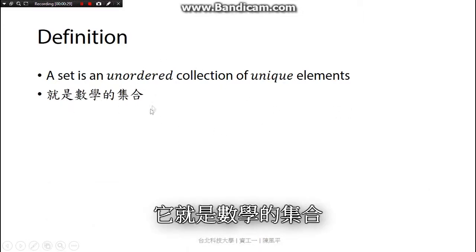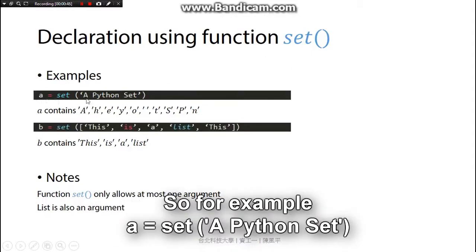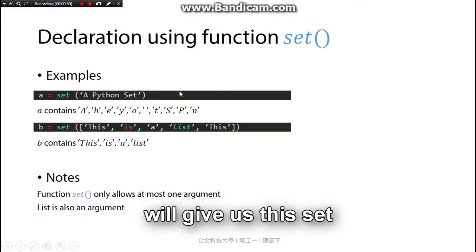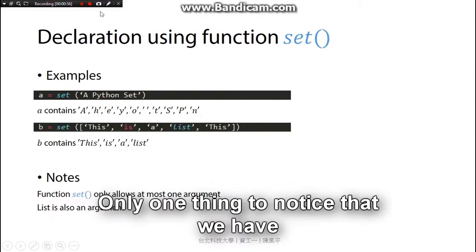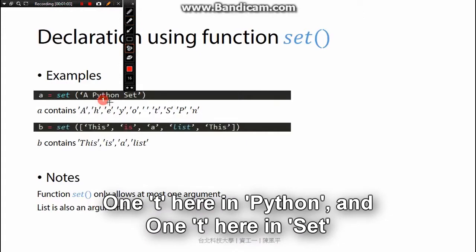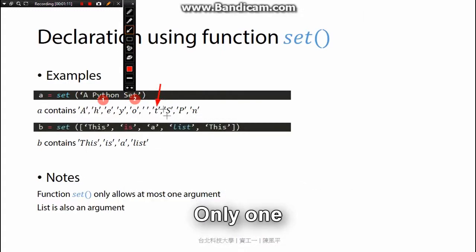First, we will learn how to declare a set using the function set. For example, a equals set of Python set will give us this set. This set will contain a, h, e, y, o, and so on. Only one thing to note is that we have one t here in Python and one t here in set, but the result only one t, only one.